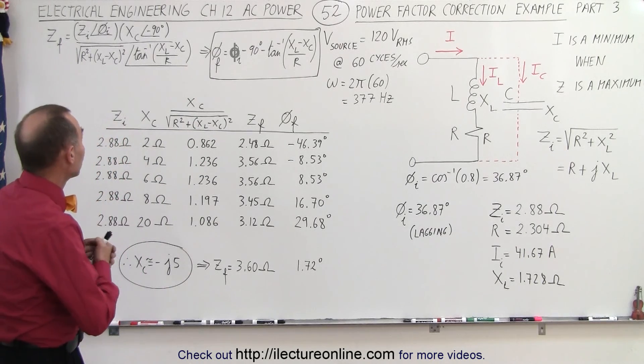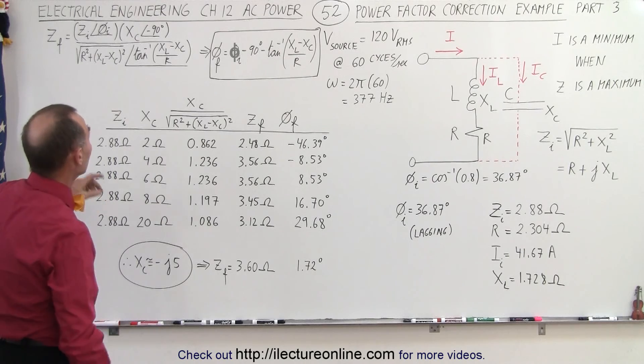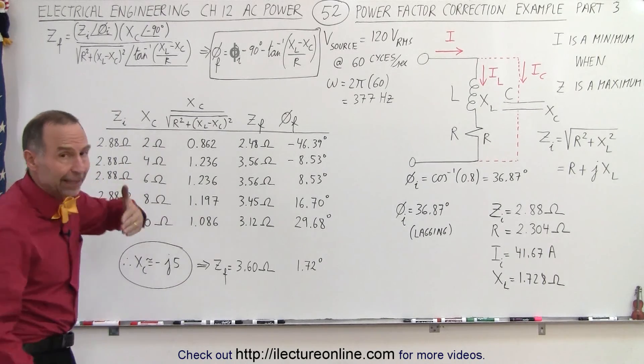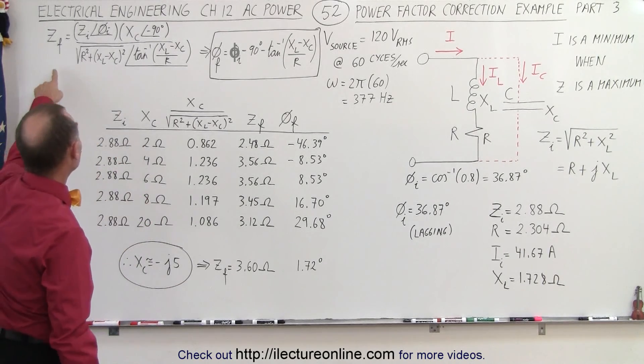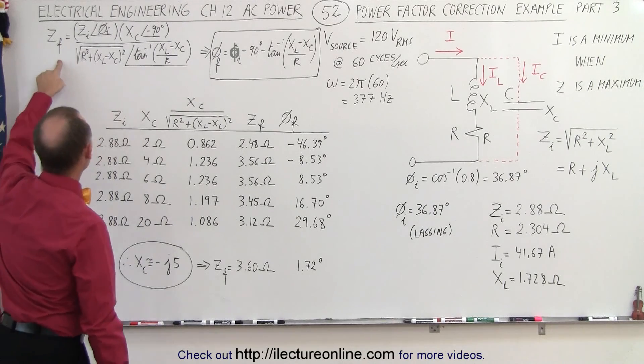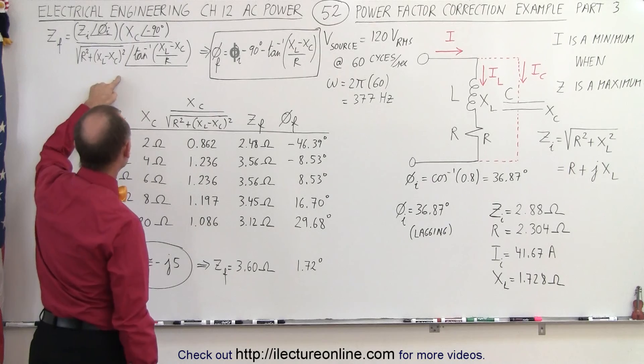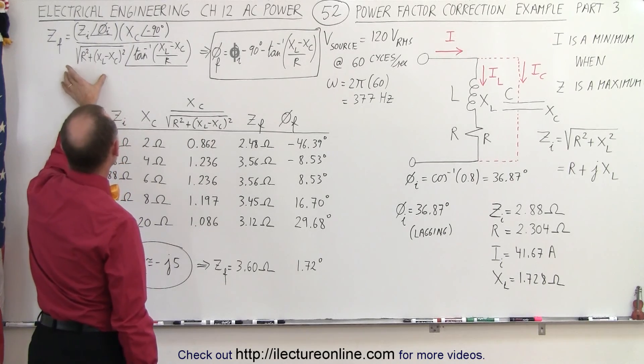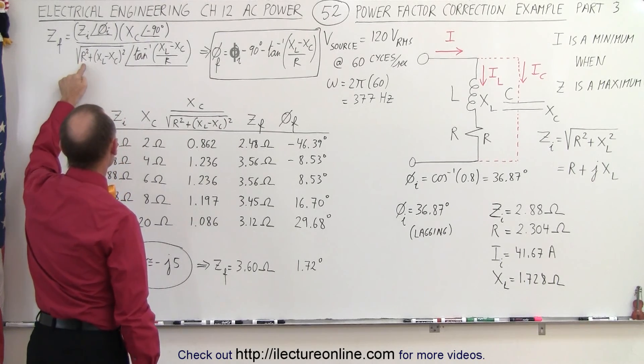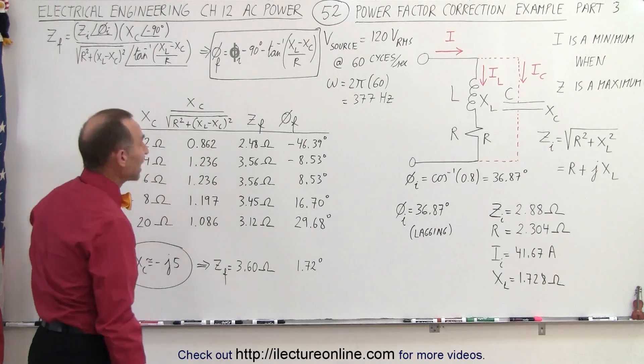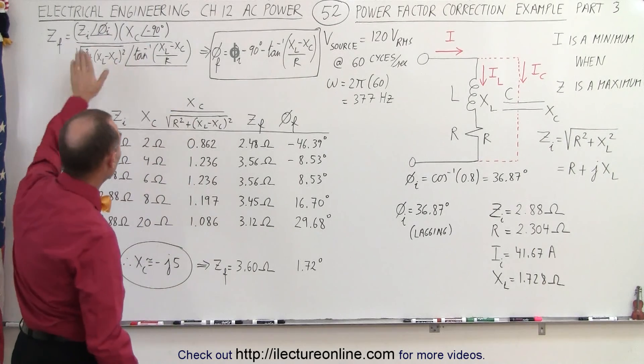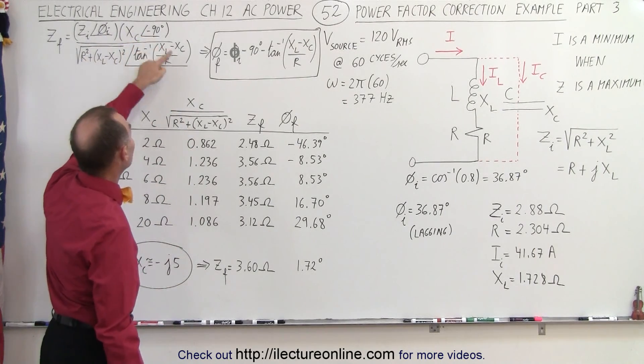And so what we're going to do now is take a look at the ways in which we can calculate the new phase angle. Remember that the final impedance is going to be the initial impedance times the capacitive reactants divided by the square root of the sum of the squares of the resistance and the difference in the reactants. And if we put it in this format, notice we get the three phase angles.